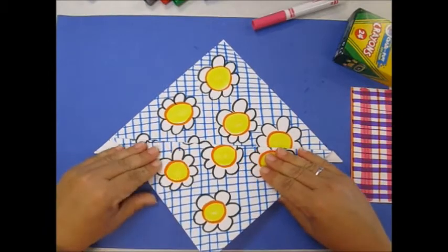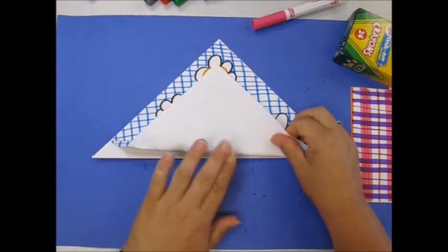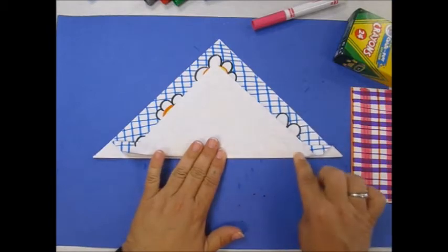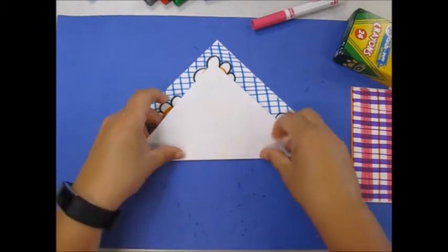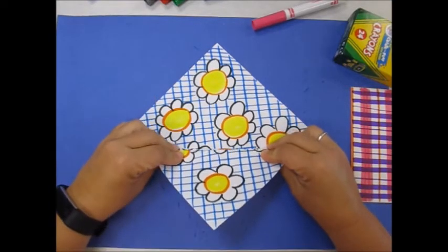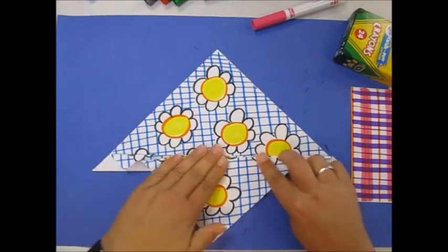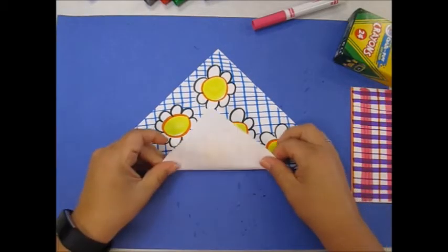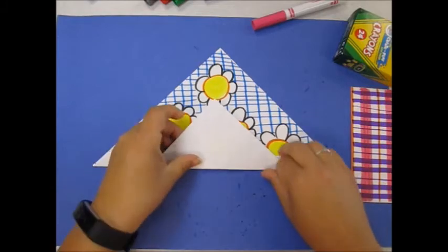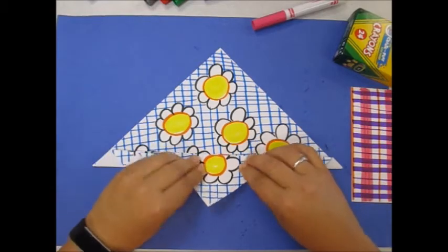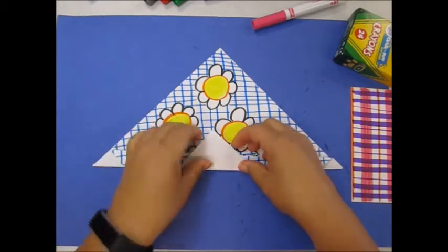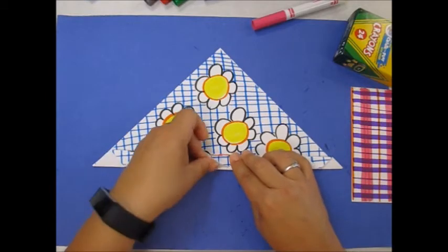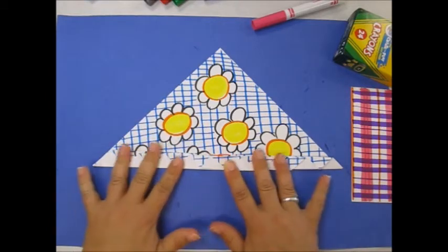So then what I do is I take this up and I find that fold line underneath and crease it again. Bring this down, find the fold line and crease it. Go up, come down, go up, come down, and go up. We call that the fan fold.